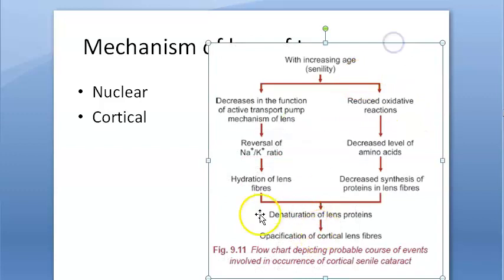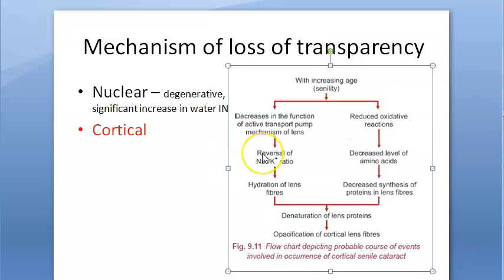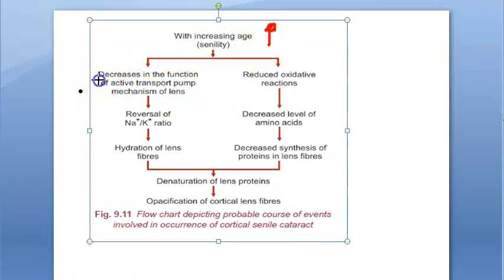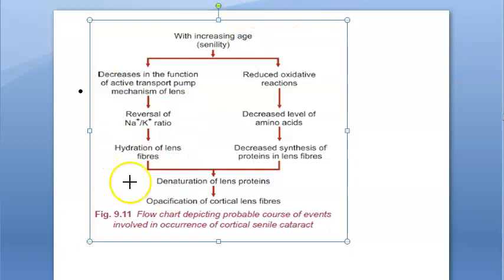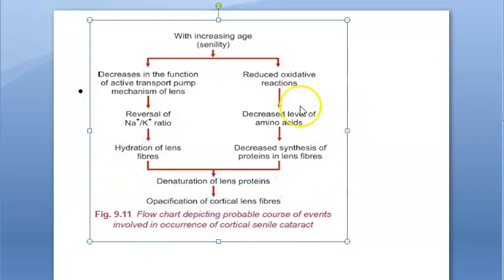Now let us look at cortical senile cataract and the mechanism of loss of transparency in the cortex. With increasing age, two things happen: first, there is a decrease in the function of the active transport pump, so the pumps in the lens are not working well. Second, there are reduced oxidative reactions. Because of the decrease in the active transport pump, there is a reversal of the sodium-potassium ratio, so the lens fibers become hydrated — more water enters — and denaturation of lens proteins occurs, causing opacification of the cortical lens fibers.